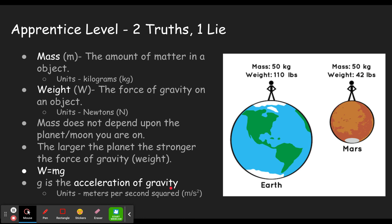The units are meters per second squared. We'll get to the number when we get to the master level. So as you go through the apprentice level, they're going to give you three statements. Two of those statements will be accurate, and another one will be false, like it'll tell you your mass changes when you go to a different planet, or your weight's the same on a different planet, or maybe some of these are defined backwards.